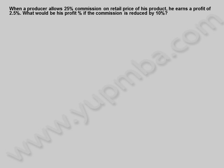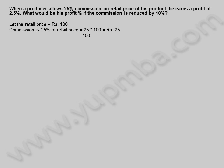Another example: when a producer allows 25% commission on the retail price of his product, he earns a profit of 2.5%. What would be his profit percentage if the commission is reduced by 10%? Let the retail price equal 100 rupees. Commission = 25% of 100 = 25 rupees.